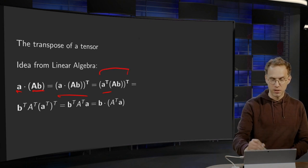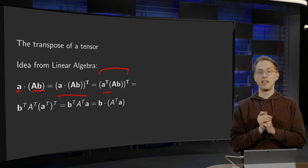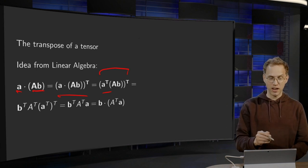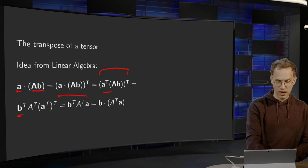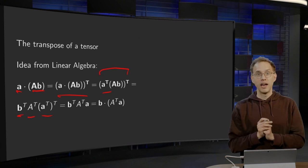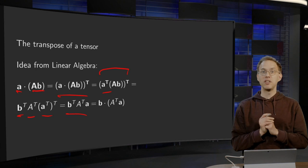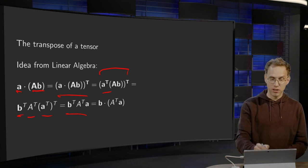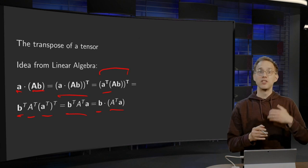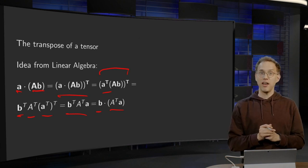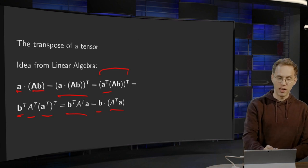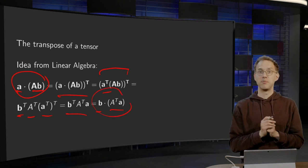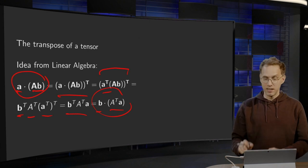So A inner product with something equals A transpose times something. And then we have this big product and we have to take the transpose — we take the transpose of all parts separately in the opposite order. We know this from linear algebra. So we get B transpose, an A transpose, and an A transpose transpose. A transpose transpose is just A, so we get B transpose times A transpose times A. We can turn this into an inner product: B inner product A transpose times A. This calculation in linear algebra gives us a relation: A inner product A times B is always equal to B inner product A transpose times A. That's the idea we're going to use to define the transpose of a tensor.